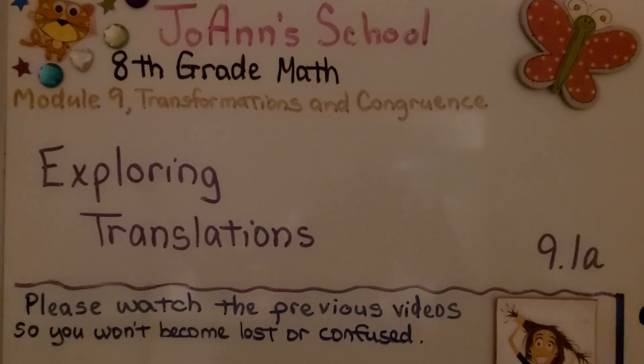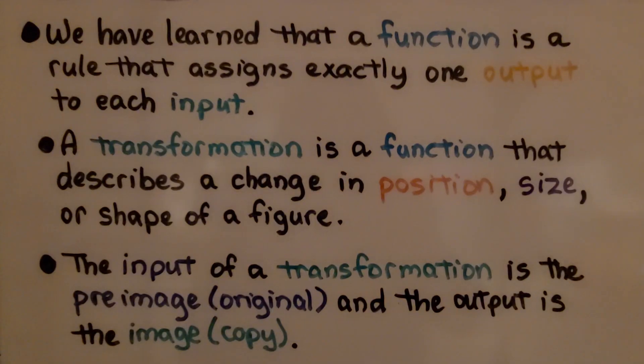Exploring Translations, Lesson 9.1a. We've learned that a function is a rule that assigns exactly one output to each input. A transformation is a function that describes a change in position, size, or shape of a figure. The input of a transformation is the pre-image (the original), and the output is the image (the copy).